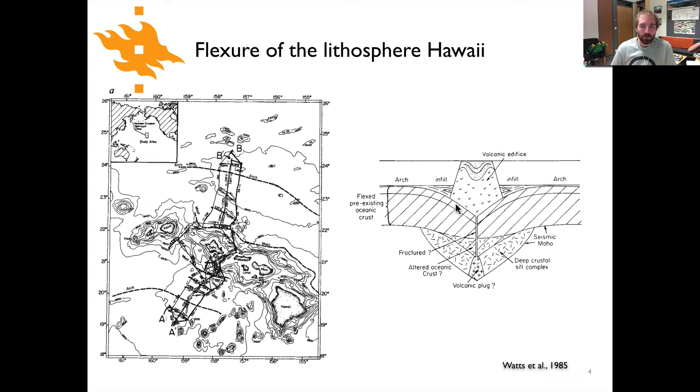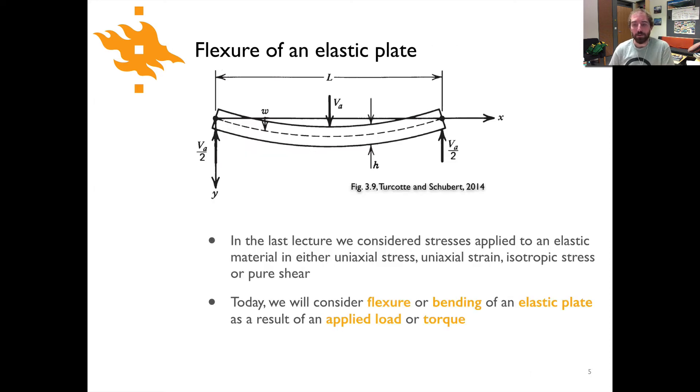This mass is sitting on the lithosphere, and as a result of the excess weight of this pile of volcanic rock, the lithosphere is flexed downward proximal to that volcanic edifice. You can see there's a region where it's flexed down right next to or near the volcanic edifice. The concept I hope at this point is already familiar.